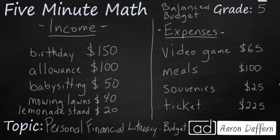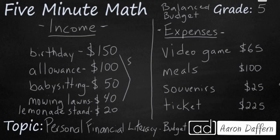So here's an example. Let's say you're going on a trip, and you've been saving up all your money. You have $150 for your birthday, $100 from allowance, you did some babysitting, mowing lawns, you even tried a lemonade stand. When you add everything up, you have $360 for this trip.